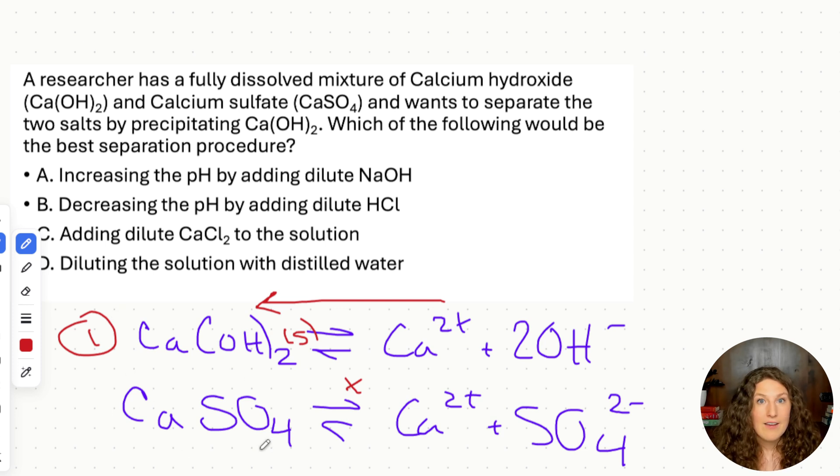Now I'm going to tell you this as a general rule. When we're talking about 5A dissolution reactions and we're talking about adjusting the solubility, diluting the solution is not going to impact this. Diluting both of these solutions is not going to make one precipitate out versus the other, so we can eliminate that. That's out of scope. It's not one of our drivers of common ion effect or Le Chatelier's principle here. So now we're left with increasing or decreasing the pH and adding dilute calcium chloride to the solution.